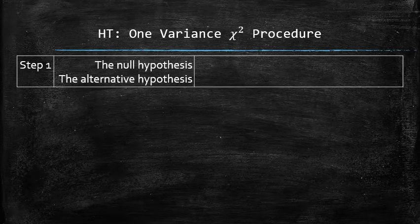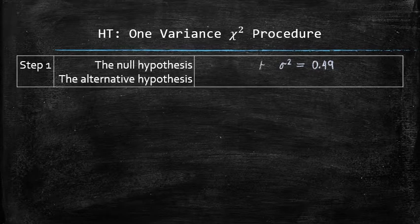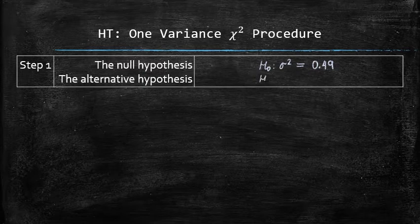Since our claim sigma-squared equals 0.49 is in the form of an equation, we are going to set it up as the null hypothesis. Therefore, the alternative hypothesis, which is always in the form of an inequality, must be carefully chosen depending on the context.